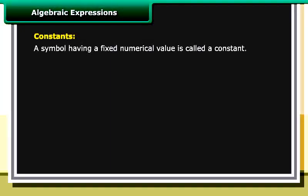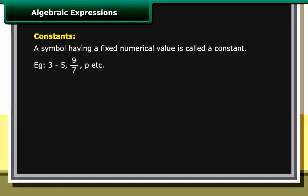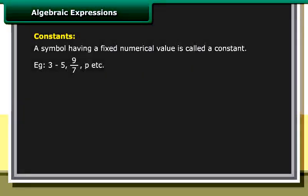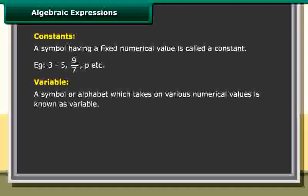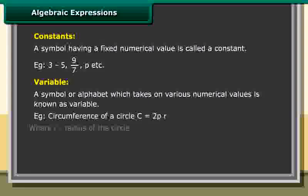Algebraic expressions — Constants: A symbol having a fixed numerical value is called a constant. Examples: 3, minus 5, 9/7, π, etc. Variable: A symbol or alphabet which takes on various numerical values is known as a variable. Example: the circumference of a circle, C equals 2πr, where r is the radius of the circle.